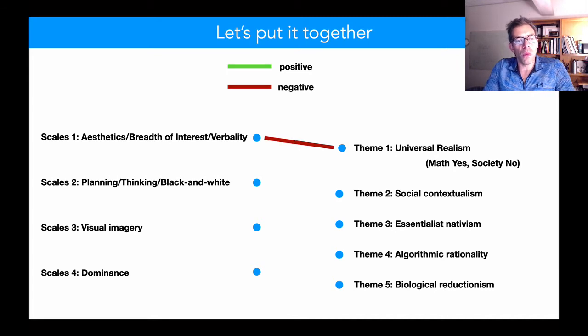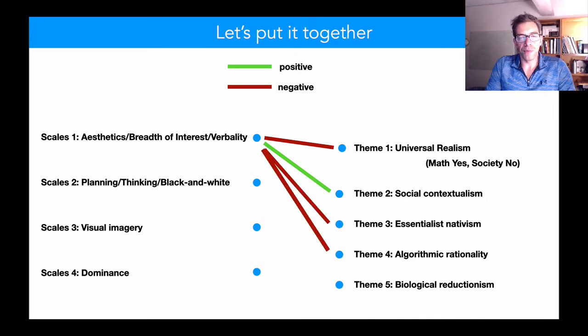So people who have greater breadth of interest, who describe themselves as more verbal, who value art, are less likely to endorse realism, less likely to endorse the importance of mathematical models, they're more likely to endorse social contextualism and reject nativism and kind of homo economicus mind as a computer model.